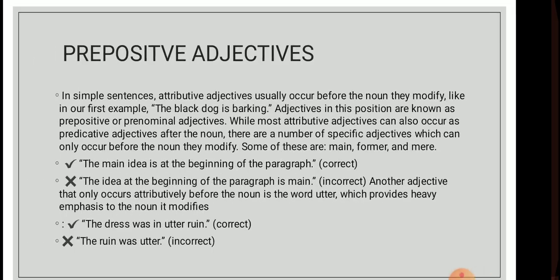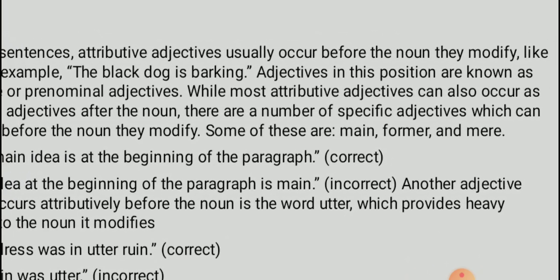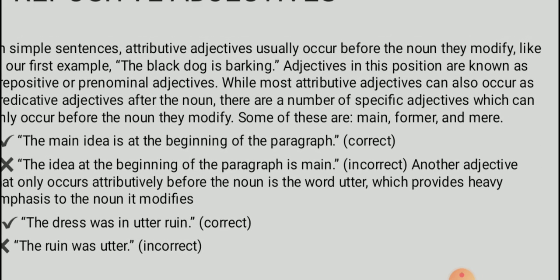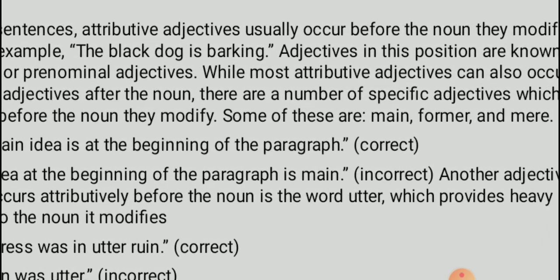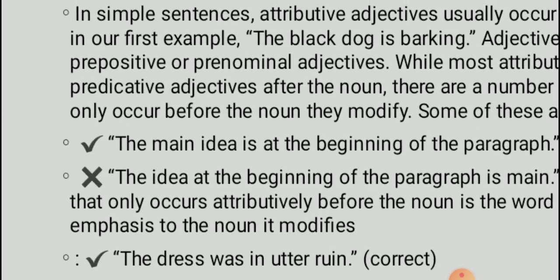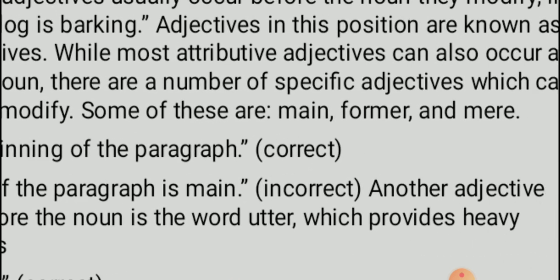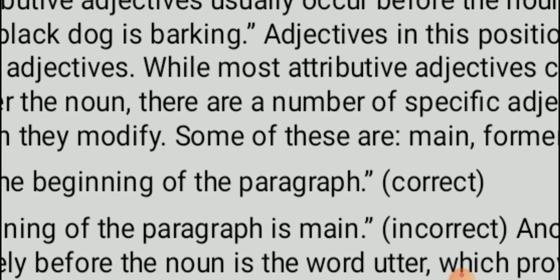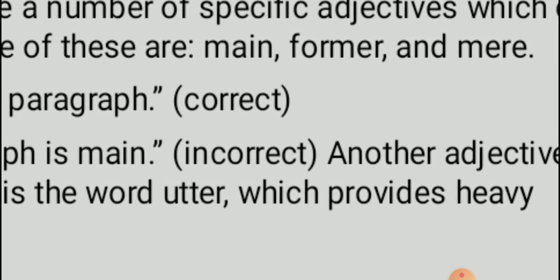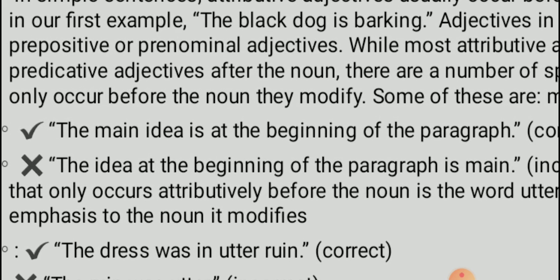The fifth type is the prepositive adjective. In simple sentences, attributive adjectives usually occur before the noun they modify — for example, 'The black dog is barking.' Adjectives in this position are known as pre-positive or pre-nominal adjectives. Most attributive adjectives can also occur predicatively after the noun. There are also specific adjectives which can only occur before the noun they modify — for example, 'main' and 'former' — as in 'The main idea is at the beginning of the paragraph.'